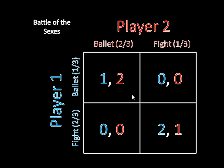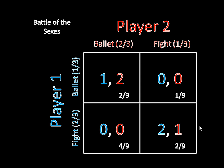We have four cells, and what we want to do is look at the probability of each of these cells actually happening. For the top left cell, there's a probability of one-third of player one going to the ballet and two-thirds for player two going to the ballet, so one-third times two-thirds equals two-ninths. For the top right, it's one-third times one-third, which is one-ninth. For the bottom left, two-thirds times two-thirds equals four-ninths. And for the bottom right, two-thirds times one-third equals two-ninths. I recommend writing these down in the matrix.